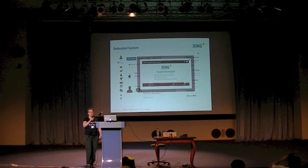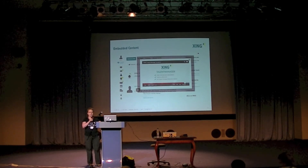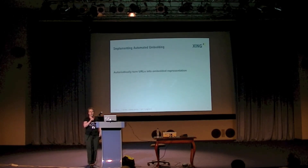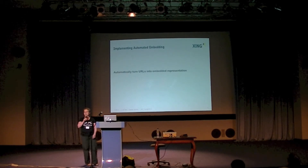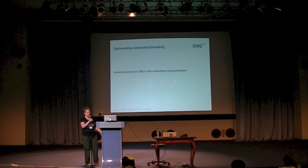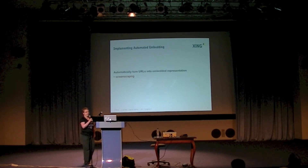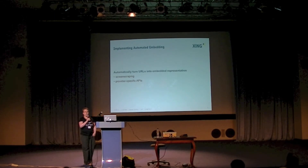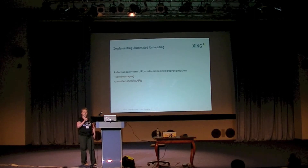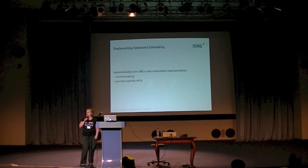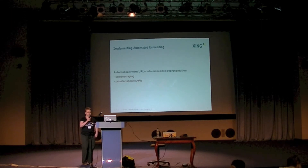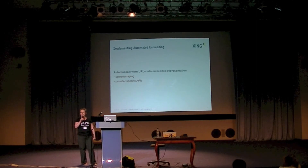We had some automated embedding mechanism that was able to turn URLs into embedded representations of the content — embedded videos, for example. Unfortunately the implementation was not very exciting: it was some weird flavor of screen scraping, and most of you have tried this at least once, so you know it can easily become a maintenance nightmare. Provider-specific APIs are much more reliable, but you need additional effort for each additional provider you want to support. If you want to give your users a choice, this can easily add up to quite some effort, mainly because all those provider-specific APIs are totally different.